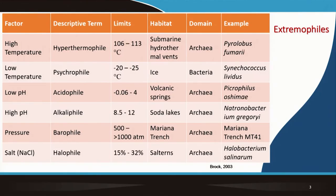We have three domains: bacteria, archaea, and eukarya. Eukarya means all eukaryotes, and all prokaryotes are divided into two domains — bacteria and archaea. Archaea are bacteria that perhaps started life in an environment nothing like what we see today. Life did not begin under conditions we see today; life began under very, very harsh conditions.